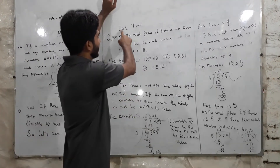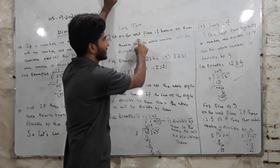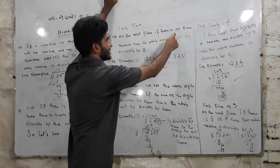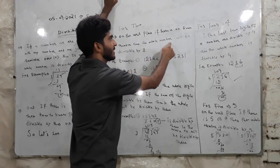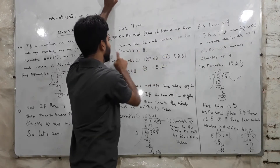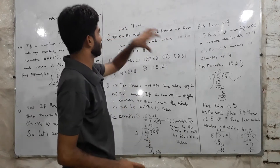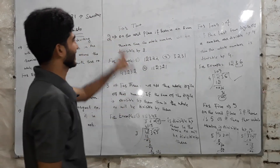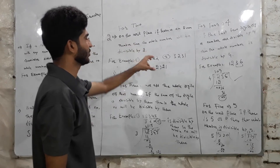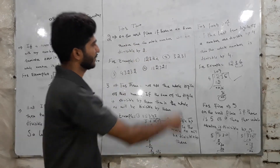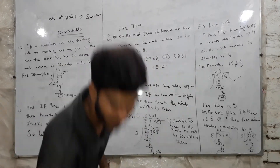For divisibility by 2, we need to check the unit place. If there is an even number at the unit place, then the whole number will be divisible by 2. We check the unit place for an even number.